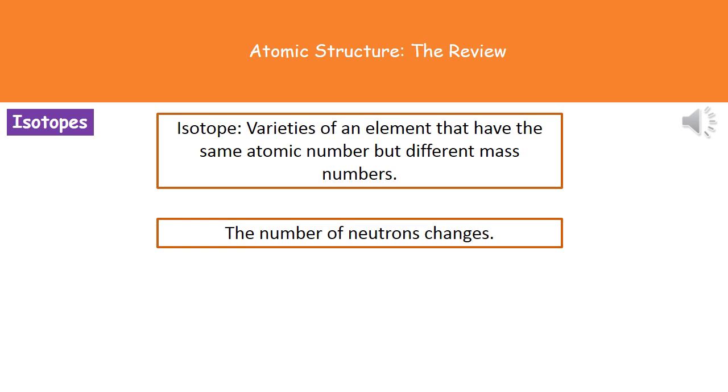The last keyword that we need to understand the meaning of for this session is the word isotope. What we actually find is that when we're looking at elements, there are a few different varieties of them. That particular element will have different varieties. They've got the same atomic number but different mass numbers, and the reason for that is that we see the number of neutrons changing. The protons and electrons stay the same, but they will have different numbers of neutrons in those different isotopes.